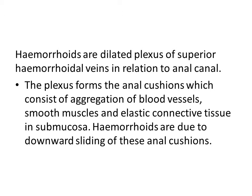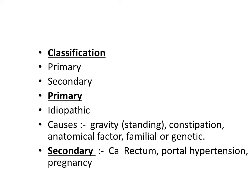Hemorrhoids are the dilated plexus of superior hemorrhoidal veins in relation to the anal canal. The plexus forms the anal cushions, which consist of aggregation of blood vessels, smooth muscles, and elastic connective tissue in the submucosa. Hemorrhoids are due to downward sliding of these anal cushions.